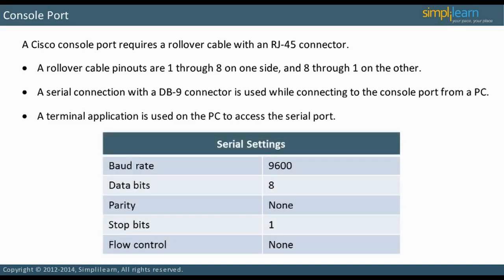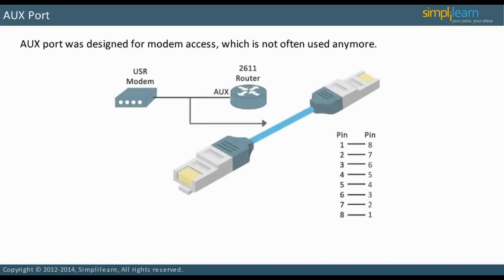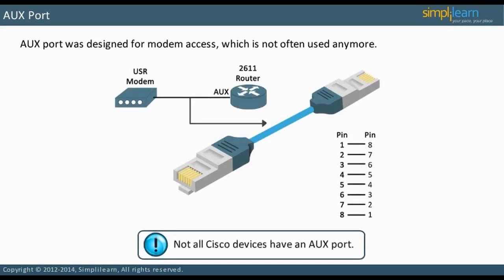The serial settings are displayed on screen — take some time to study them. Let us look at some other types of ports on Cisco devices. The AUX port was designed for modem access, which is not used often anymore. Not all Cisco devices have an AUX port. Let us now discuss an Ethernet port in the following slide.